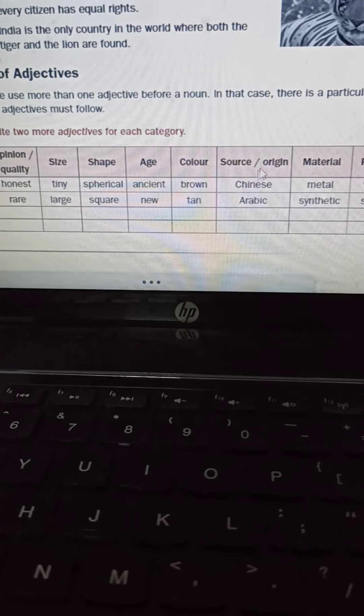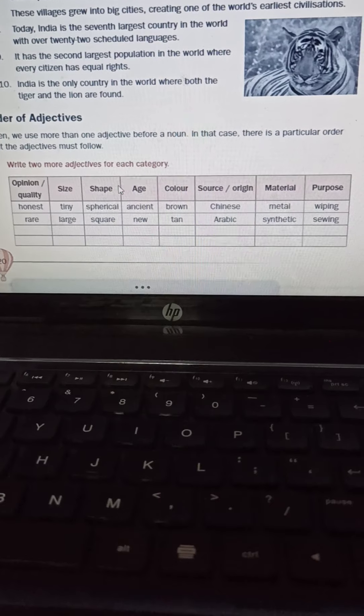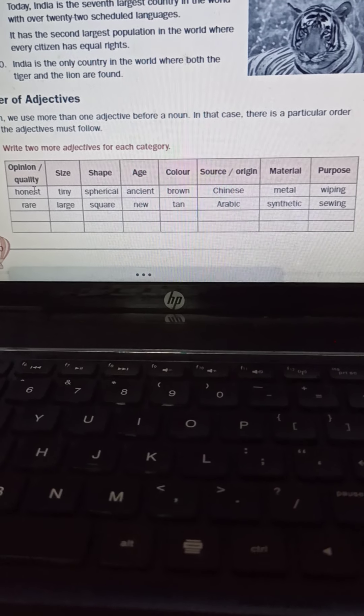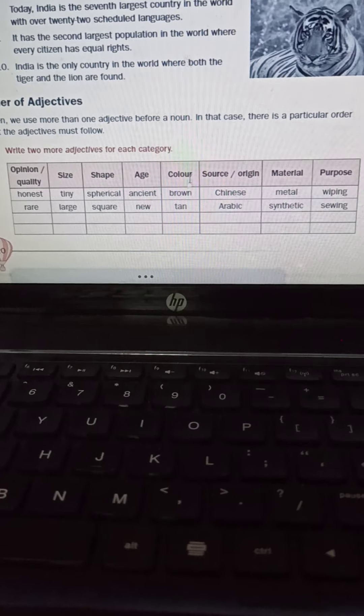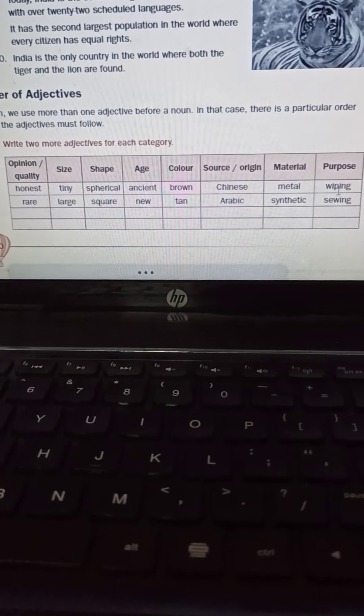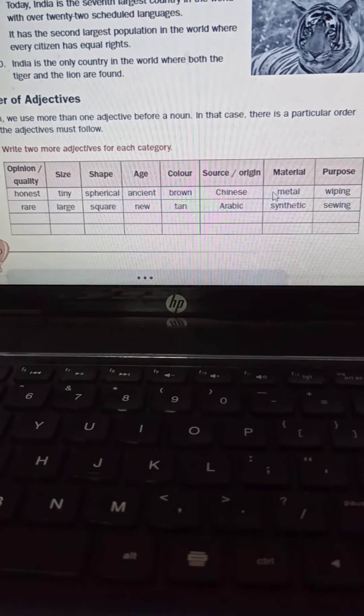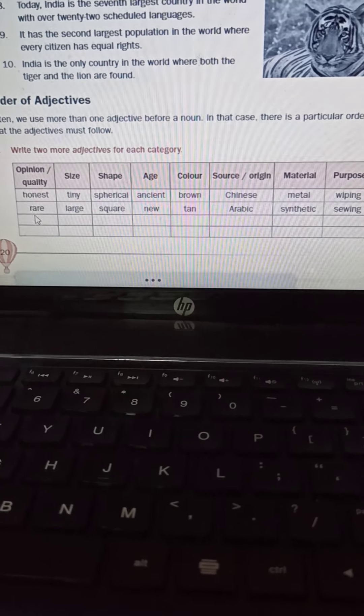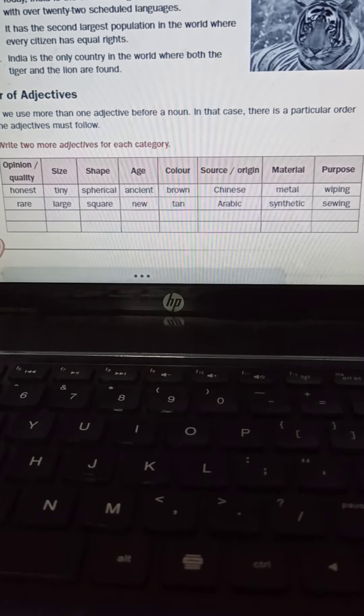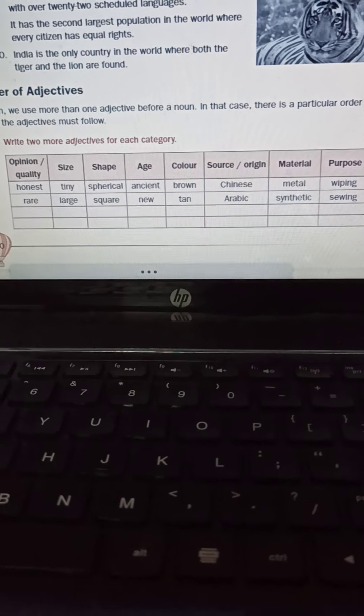This is the order that I told you, the order of adjectives. So this table is, children, very important. I would request you, I would ask you to make this table in your copy. The first one is your opinion/quantity. The second is your size, third is shape, age, color, source, origin, material, purpose. So this is the order in which the adjective will be placed. Whenever you get two, three adjectives and you are asked to frame a sentence using those adjectives, children, remember: always opinion, the quality will come first, then the size will come next, then shape, then age, then color, source, material, and last the purpose will come. So this table is very important. Please do draw this table in your notebooks.